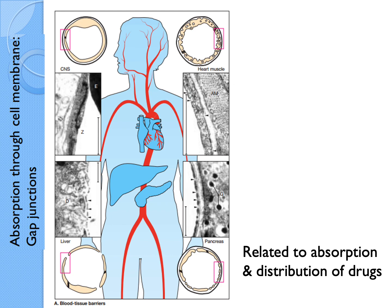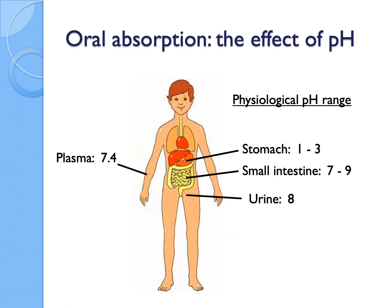The bigger the gap, the easier it is for things to move around. For other sections there will be a little bit of gap junction, but not as huge. The tightest one will be in the central nervous system, which is where the blood-brain barrier was mentioned earlier. It's a very tight junction because you don't want any toxic substance to enter your brain very easily. But the gap will be a little bit bigger when there are certain disease conditions like inflammation.